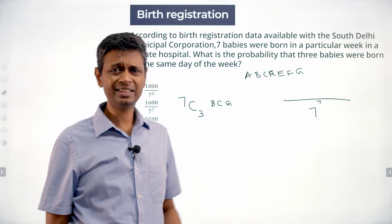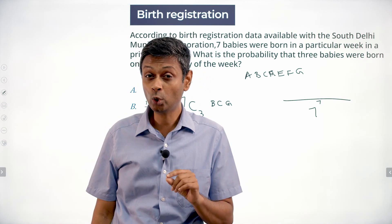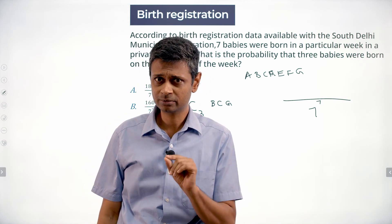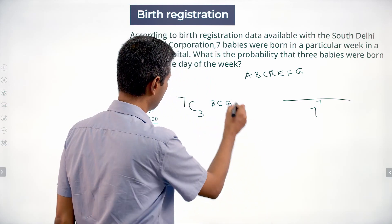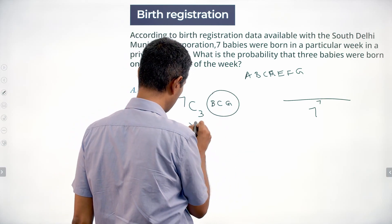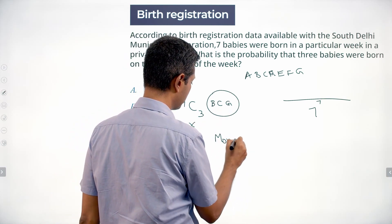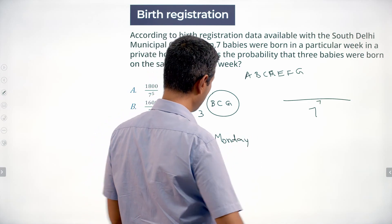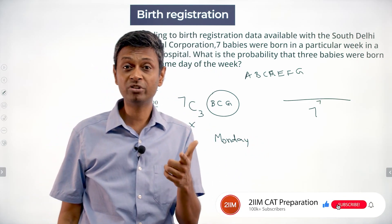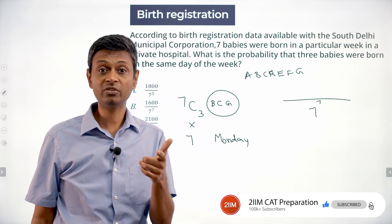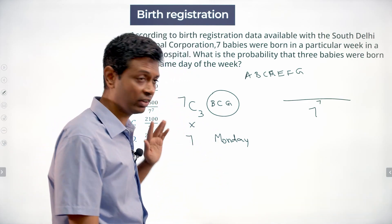Some 3 have to be born on the same day of the week. We don't know which day that is, so we select that also — into 7. Let's say we select B, C, G born on Monday. It could have been A, B, C born on Thursday or D, E, F born on Friday. All those combinations add up to 7C3 into 7.